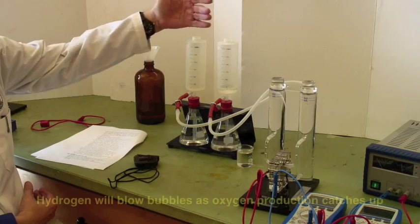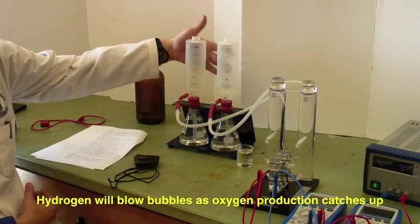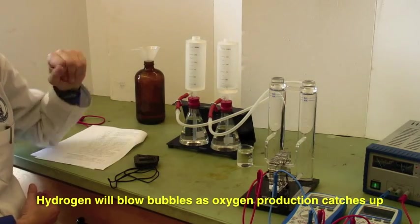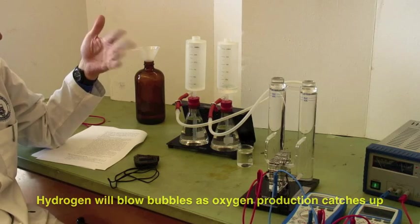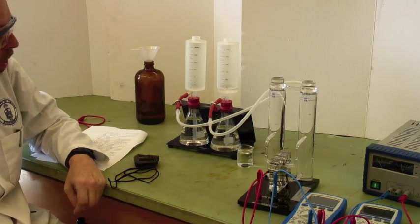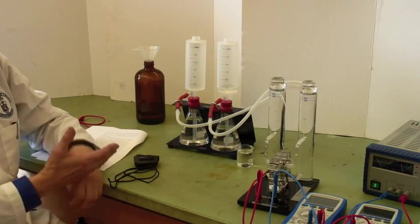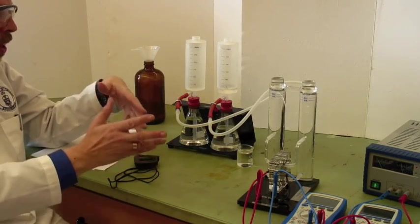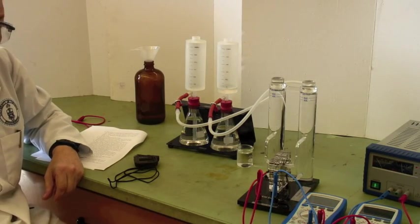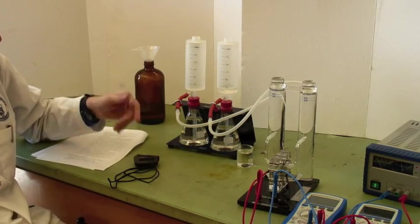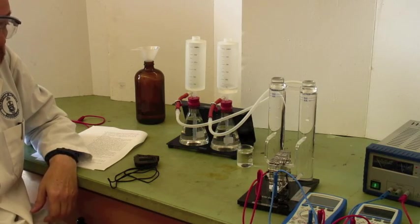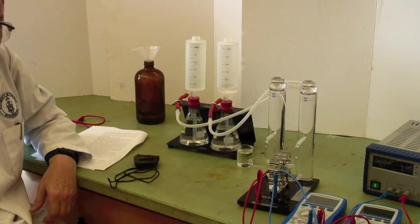When this is full, what will happen is you will start getting bubbles of hydrogen gas coming off as it gets up to its maximum storage capacity underneath. It'll start blowing bubbles. Don't be alarmed by this. It will continue. So, at this point, you would continue to produce hydrogen and oxygen until both of these gasometers are full of hydrogen or oxygen, timing how long each 25 ml takes for the hydrogen production as a function of amperage.